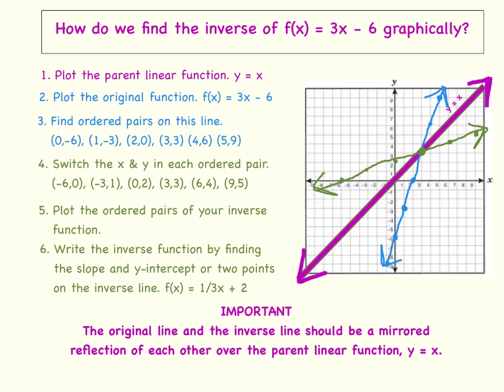Now you are ready to plot the ordered pairs of your inverse function. We will start out with negative 6, 0, and then we go to negative 3, 1, 0, 2, 3, 3, 6, 4, and 9, 5.